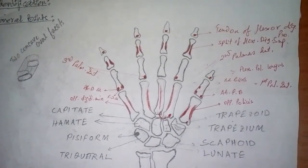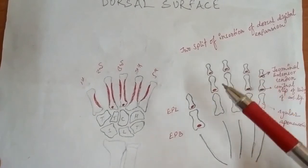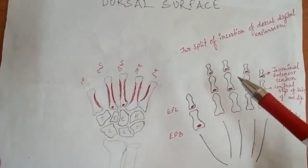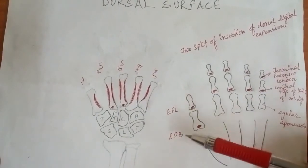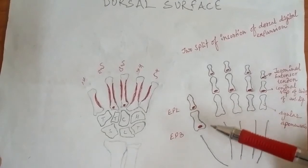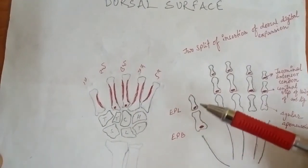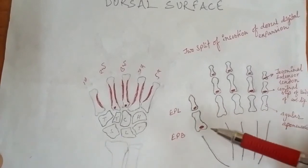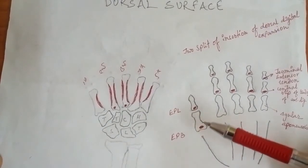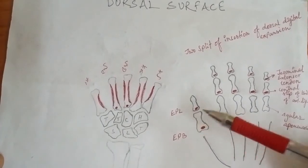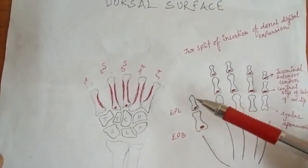Now we are moving to the dorsal surface of the phalanges, where the attachments of the muscles are clearly seen and easily understandable. On the first digit — the thumb — the attachments are the extensor pollicis brevis and extensor pollicis longus, which are similar in function. The brevis is the shorter one and the longus is the longer one. The attachment on the dorsal surface of the base of the proximal phalanx of the first digit is the extensor pollicis brevis, and right over here is the extensor pollicis longus.